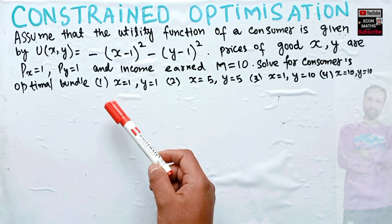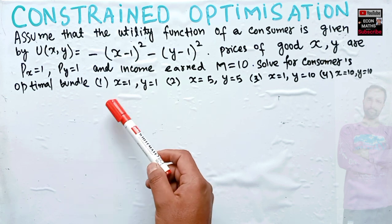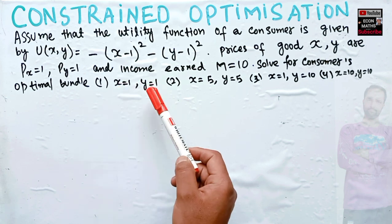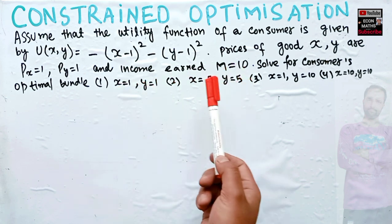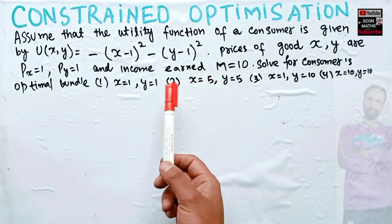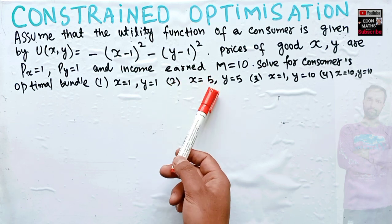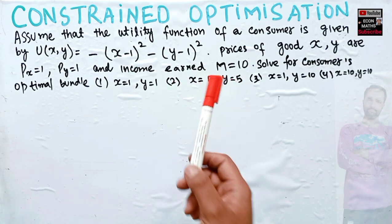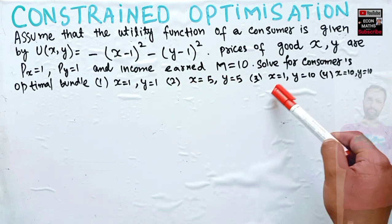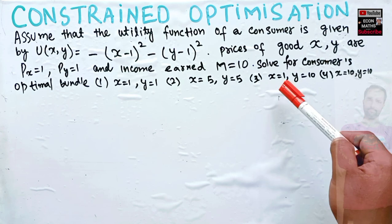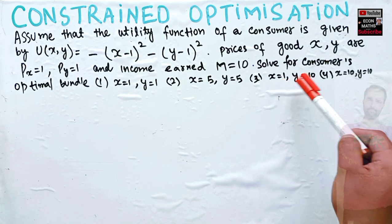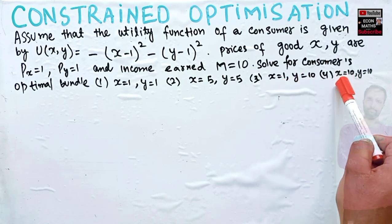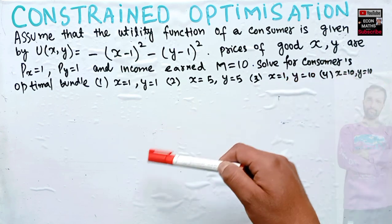The options are: at optimal, x = 1 and y = 1; second option, x = 5 and y = 5; third option, x = 1 and y = 10; and fourth option, x = 10 and y = 10.